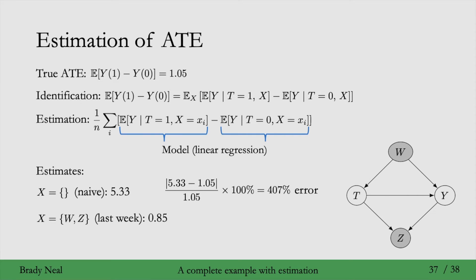Now, if we were to just adjust for all covariates available, which is what we did last week in the potential outcomes lecture, we get the average treatment effect of 0.85. This corresponds to a 19% error. The reason that we see this 19% error is because of the collider bias we get from adjusting for the collider Z. If we just take Z out of the conditioning set, then we get an unbiased estimate. And here we get an estimate of 1.0502. So now we've taken the error all the way down to 0.02%. And this remaining error is purely due to sampling randomness.